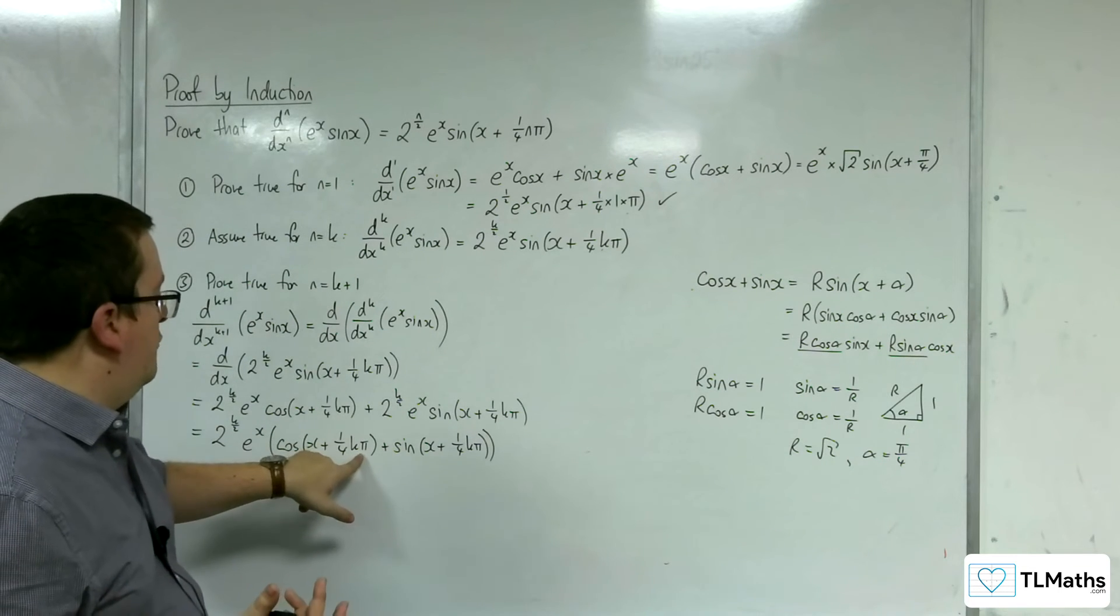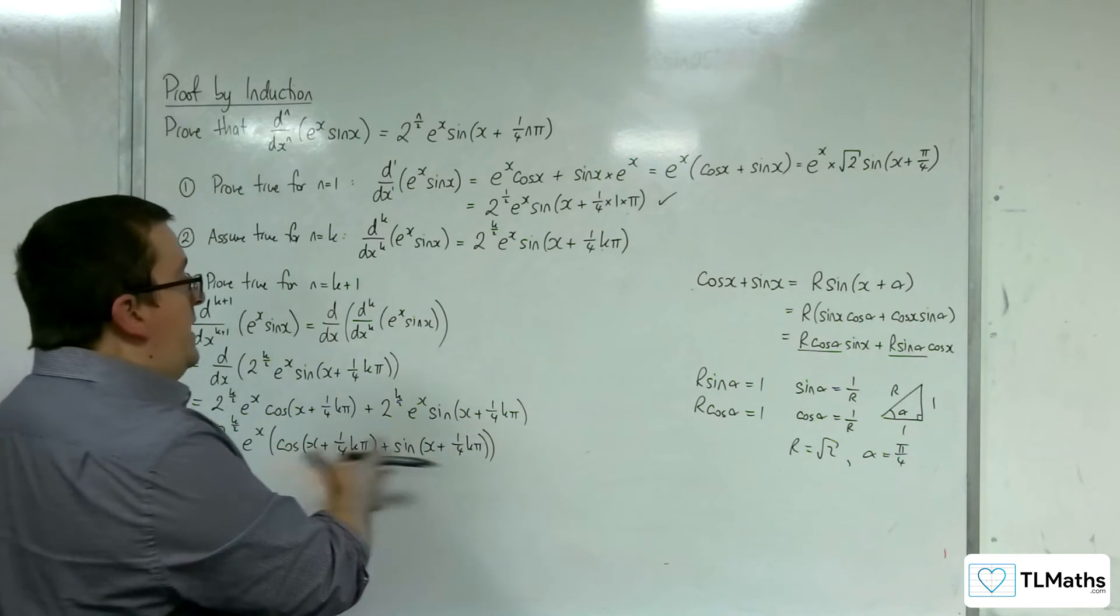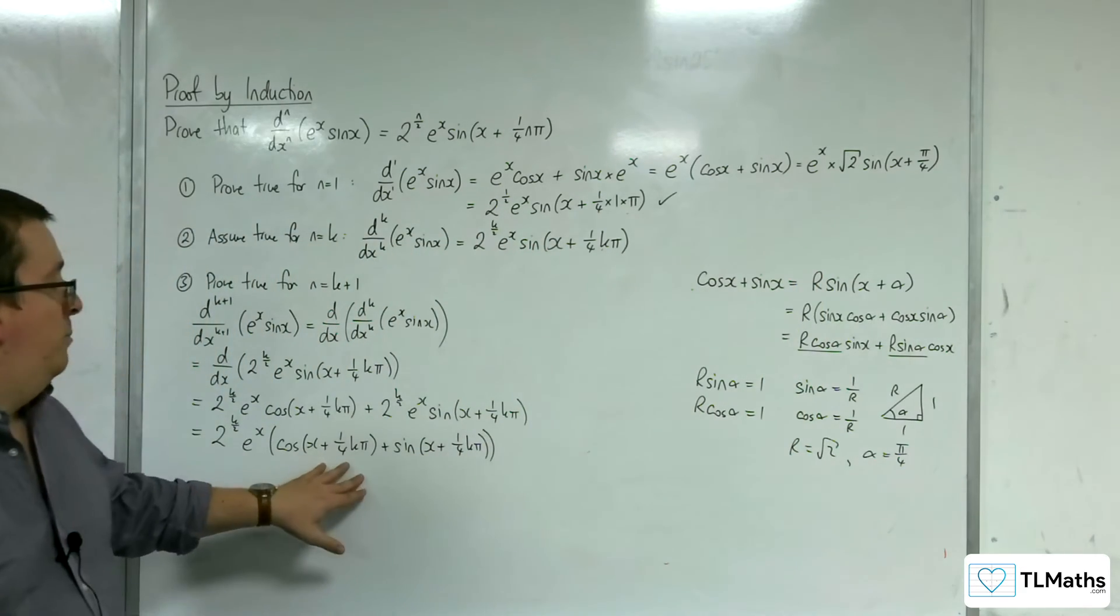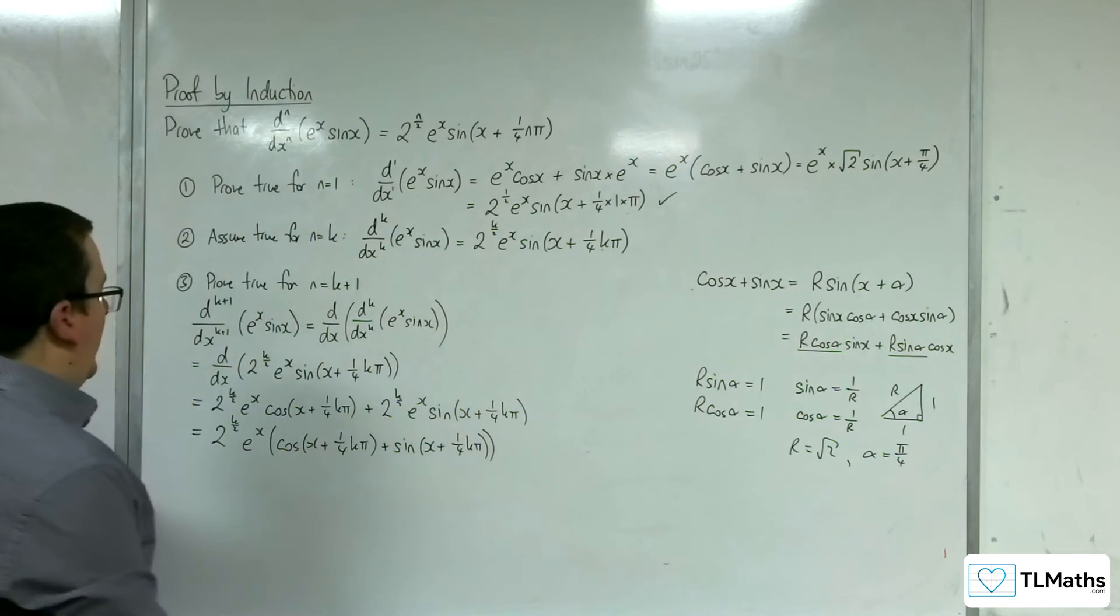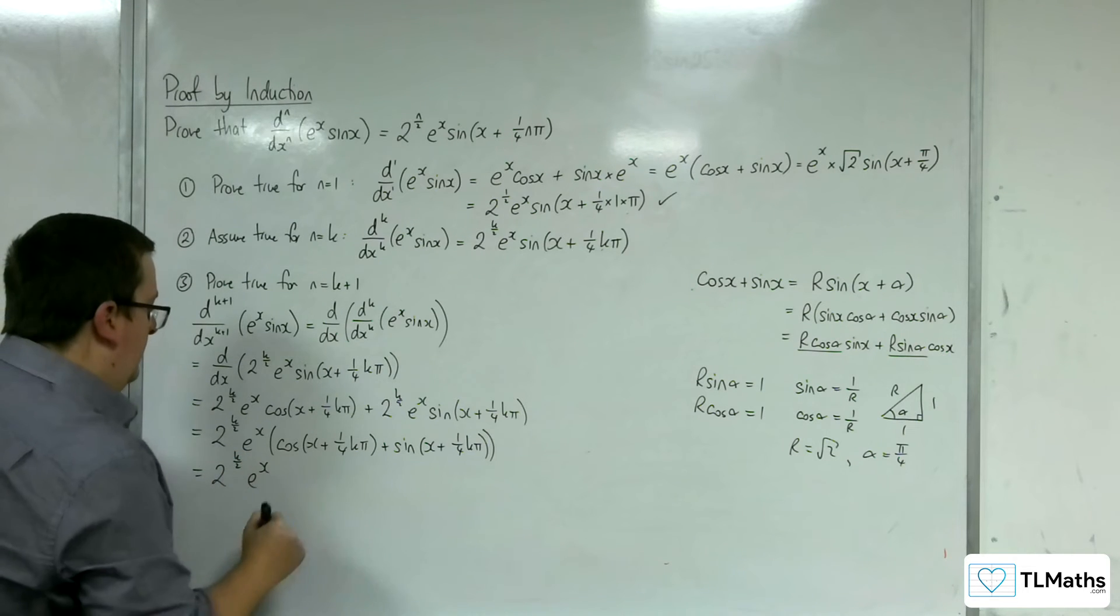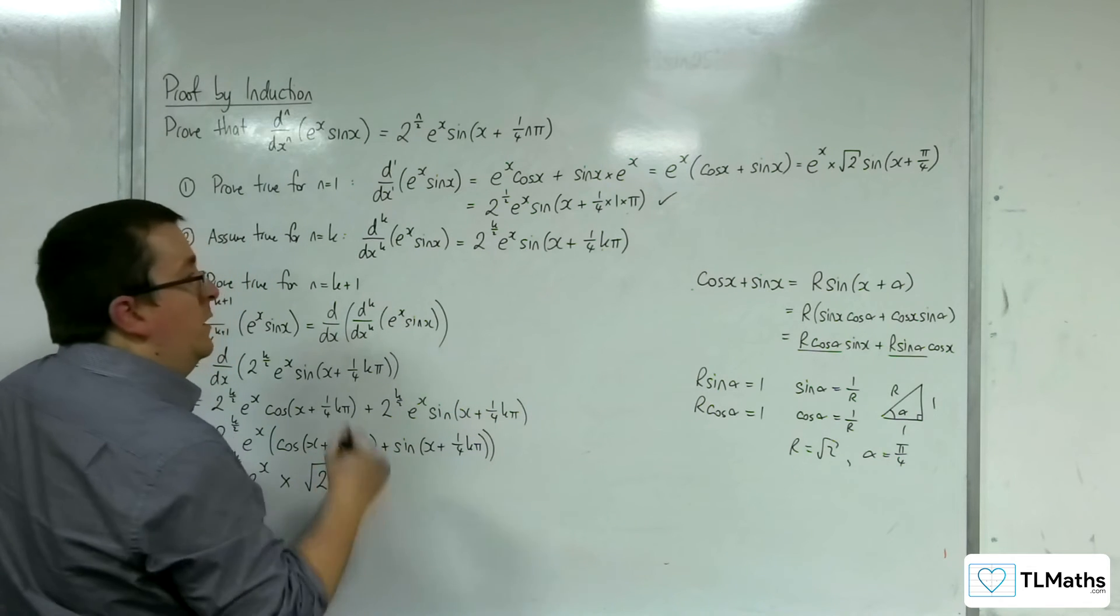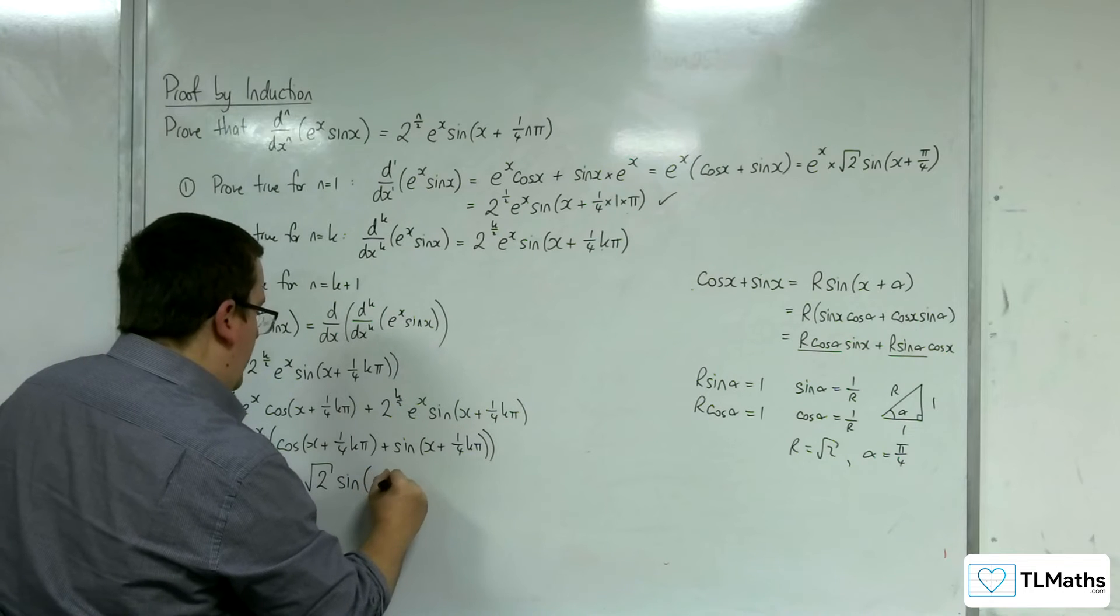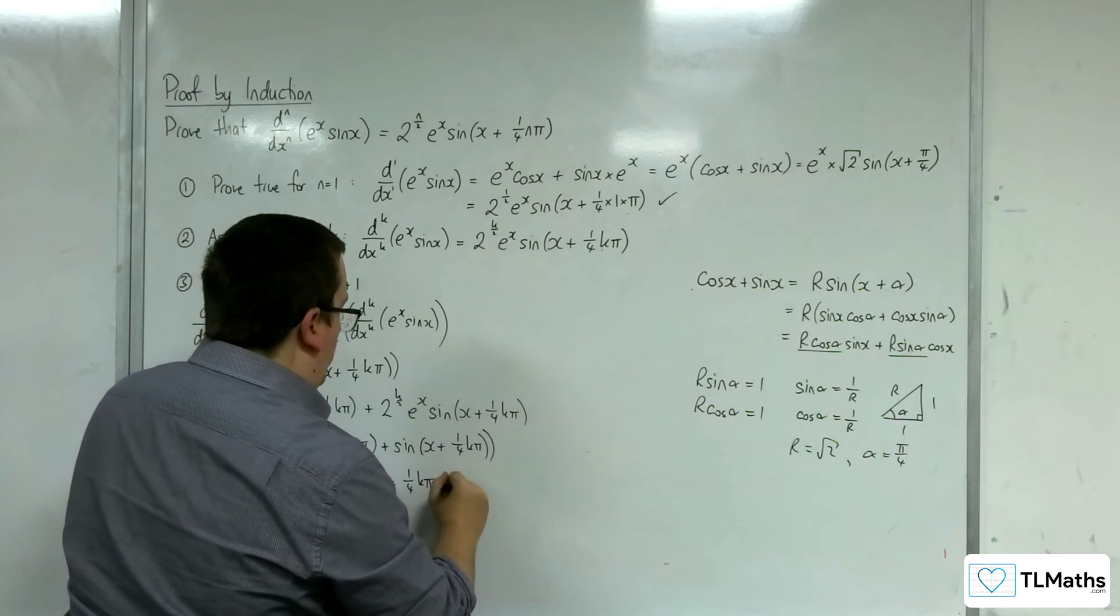This angle here, whatever I've got in the bracket here, is the same as what I've got in the bracket there. I would break it apart in exactly the same way, just replacing all of the x's with x plus 1 quarter k pi. It's exactly the same working. So actually, this is equal to 2 to the k over 2 e to the x times by root 2 sine of x, which is the x plus 1 quarter k pi, plus alpha, which is pi over 4.